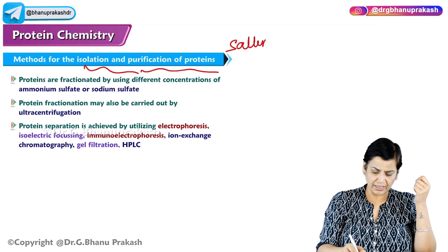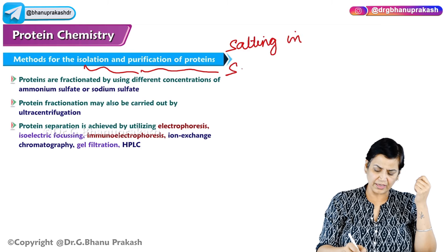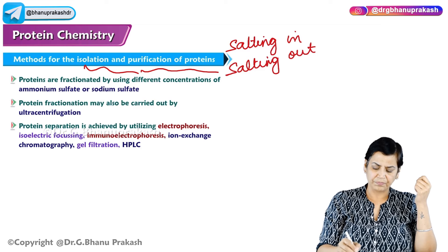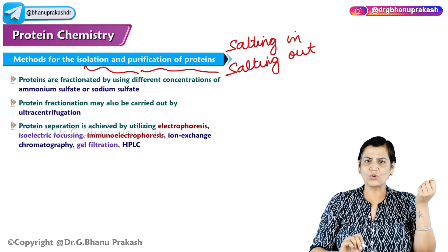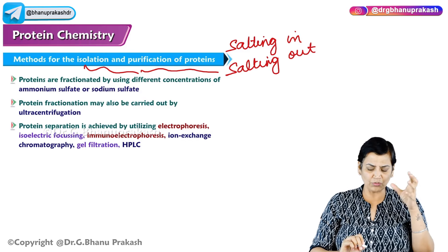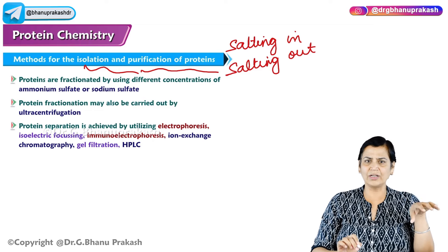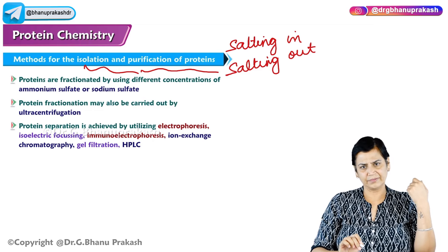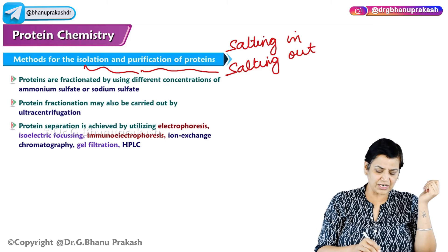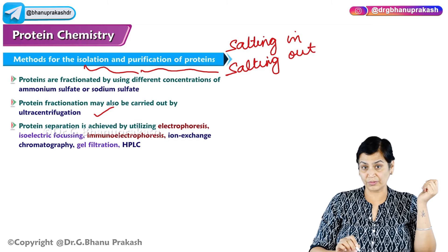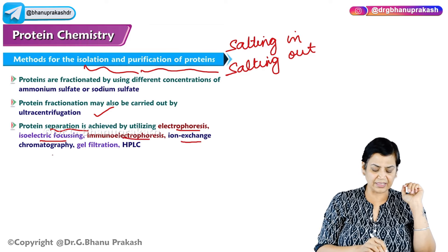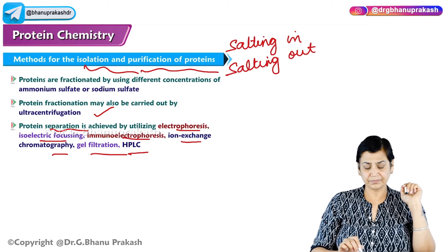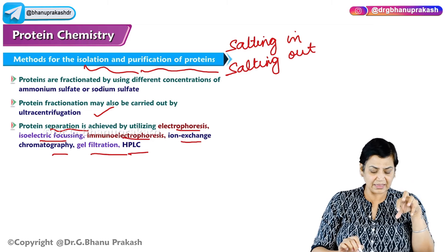Salting in and salting out. To separate amino acids, electrophoresis, isoelectric focusing, immunoelectrophoresis, ion exchange, gel filtration, and HPLC are all techniques that come together. You need to know what a protein is, what an amino acid is, and what a polypeptide is.